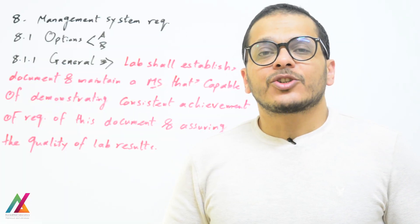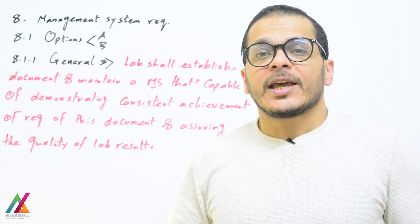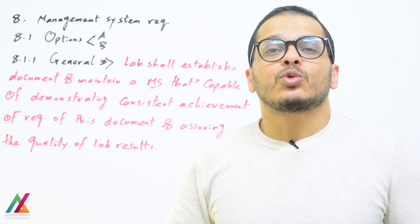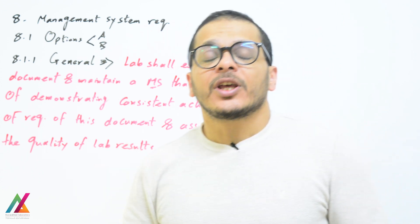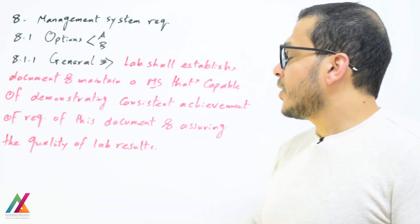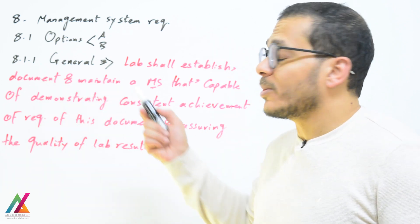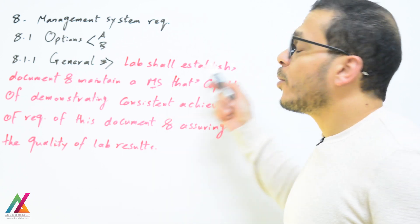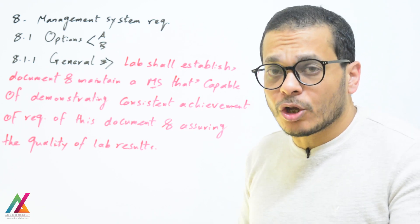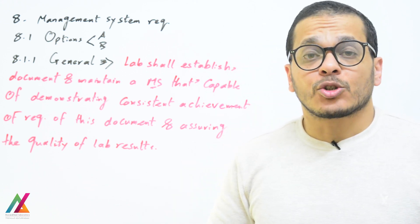Welcome back with a new lecture on ISO/IEC 17025:2017 edition. Under management system requirements, we have two options — Option A and Option B — that will be explained in the next lectures. The general requirement states the lab shall establish, document, and maintain a management system capable of supporting and demonstrating consistent achievement of the requirements of this document and assuring the quality of lab results.